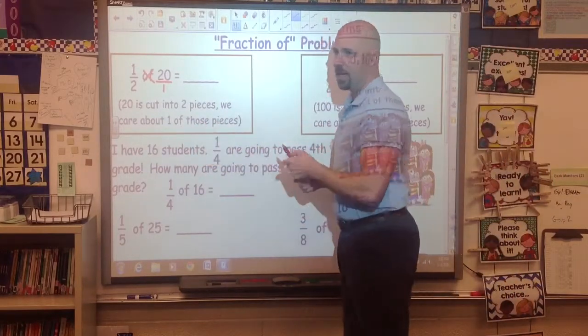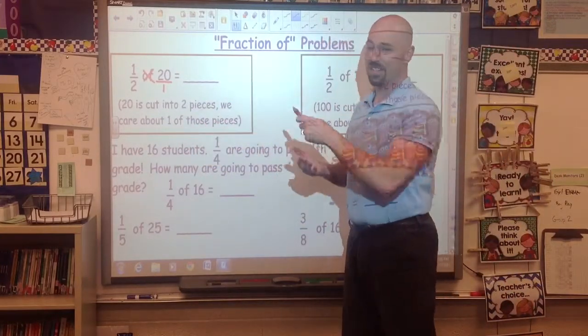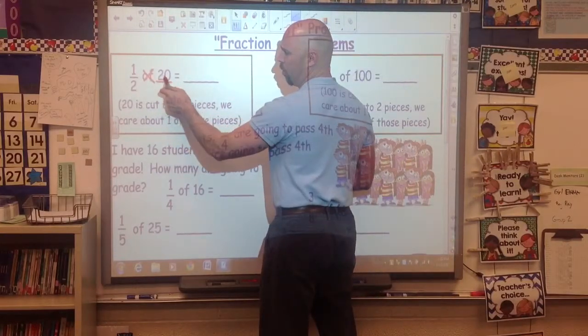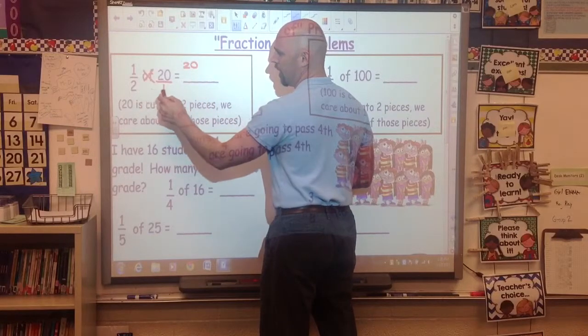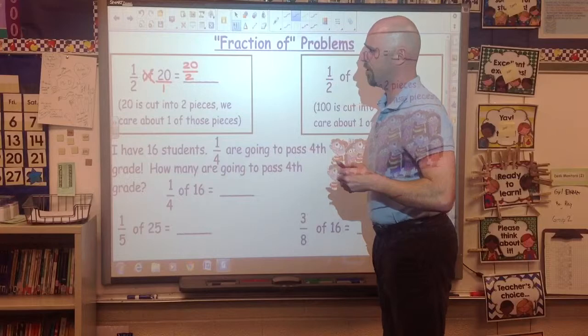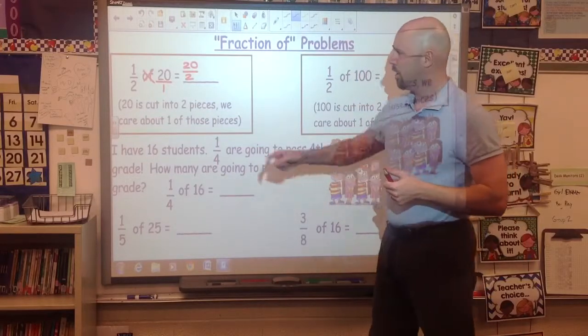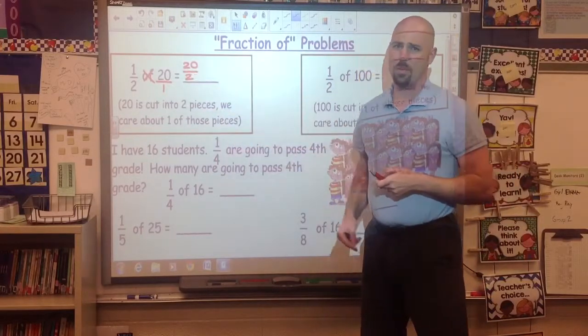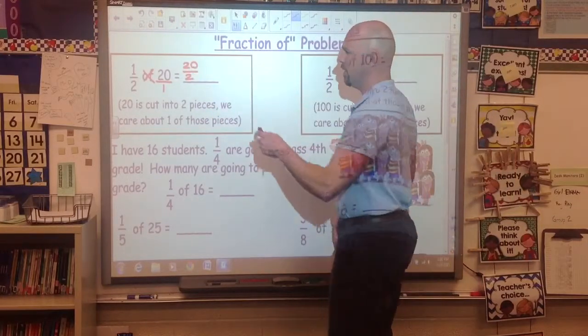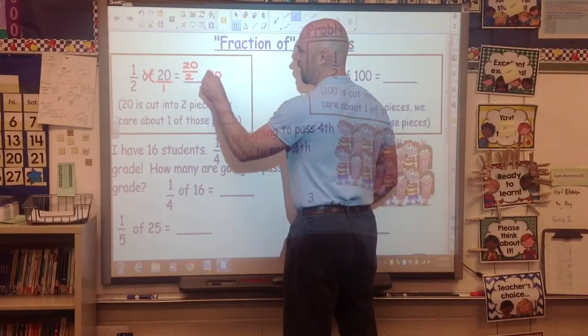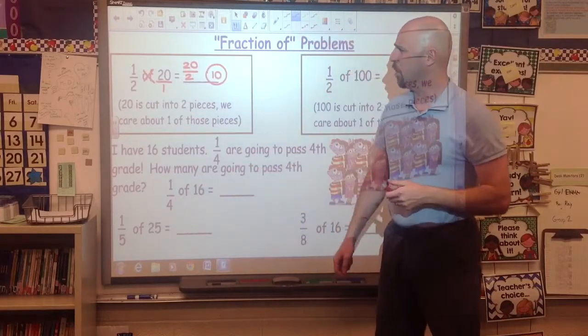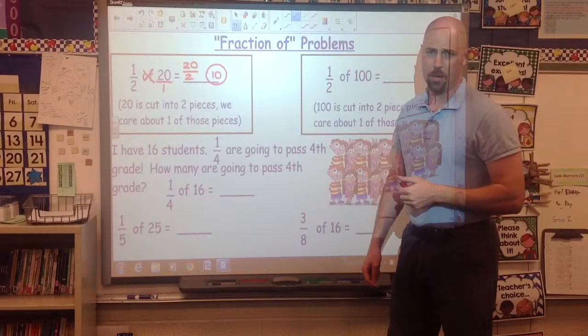When we multiply, we multiply straight across just like we would normally do. So, in this case, it's 1 times 20 is 20. 2 times 1 is 2. So, we have a fraction 20 over 2, but we've also learned that this fraction line is another way of saying divide. So, 20 divided by 2 is actually 10. And when the kids look at this, we go, so is one-half of 20 ten? Yeah. Okay, that technique works.